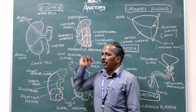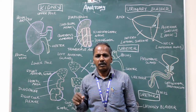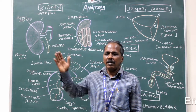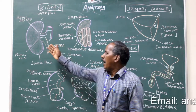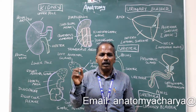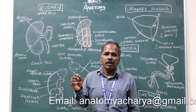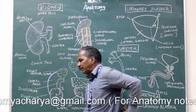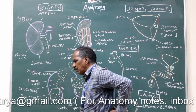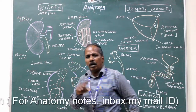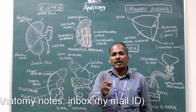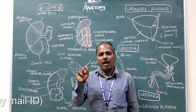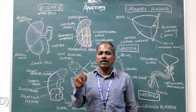Kidney. It is a paired excretory organ situated on the posterior abdominal wall, one on either side of the first lumbar vertebra — L1 vertebra.